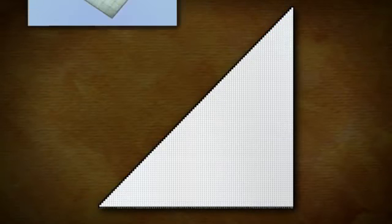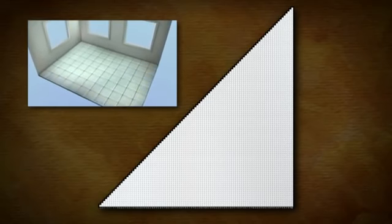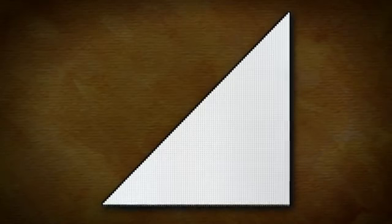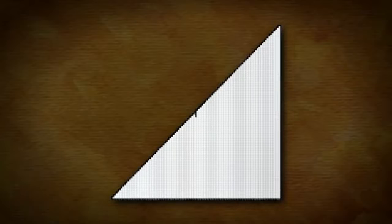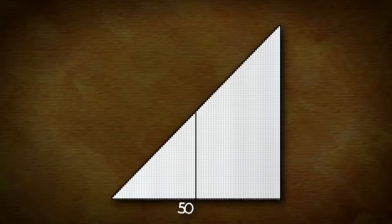The task now becomes to count the total number of squares. Previously we used multiplication to determine a number of tiles arranged in a rectangular shape. But now we don't have a rectangle, but a triangle, which we don't yet know how to deal with. Perhaps we could find a way to turn this triangular shape into a rectangle.